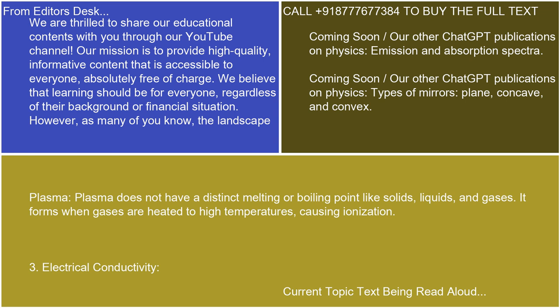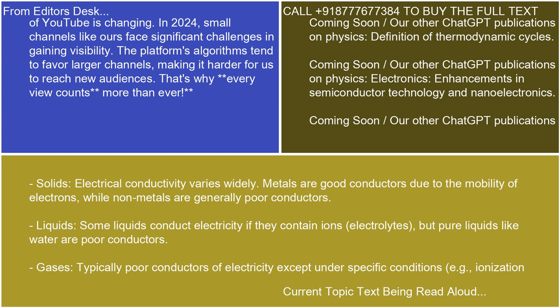3. Electrical Conductivity — Solids: Electrical conductivity varies widely. Metals are good conductors due to the mobility of electrons, while nonmetals are generally poor conductors. Liquids: Some liquids conduct electricity if they contain ions (electrolytes), but pure liquids like water are poor conductors. Gases: Typically poor conductors of electricity except under specific conditions, e.g. ionization.